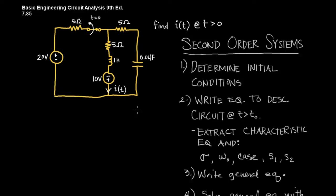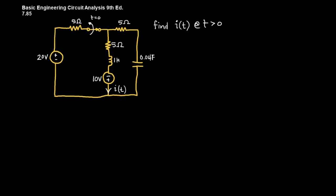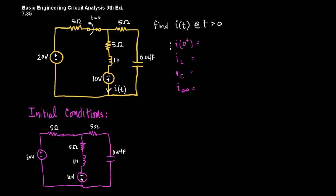We begin by determining the initial conditions. We need to find i at the moment after the quantum event, the current through the inductor, the voltage across the capacitor, and i at infinity. Let's also recognize right off the bat that i(t) is the same as i_L, so once we've found one, we've found the other. In this particular circuit, that's going to simplify things for us.